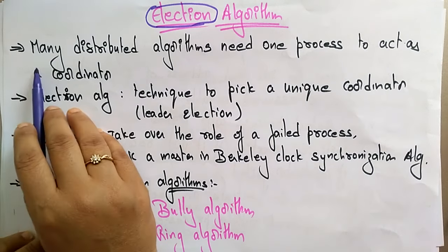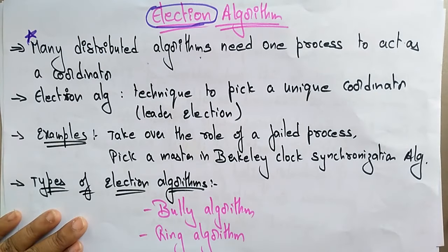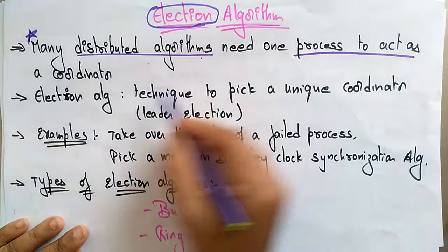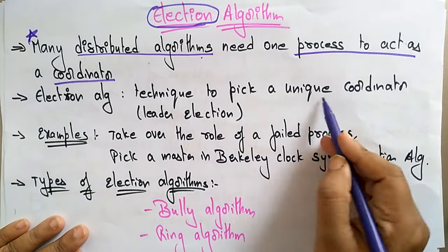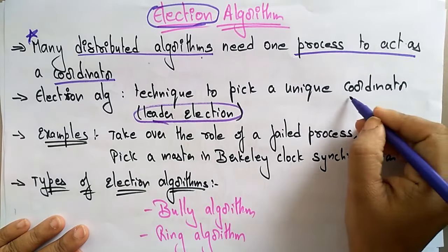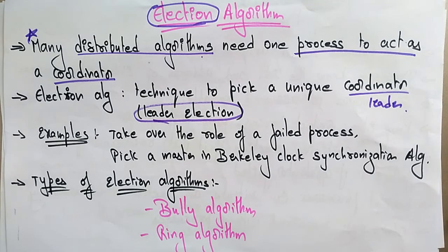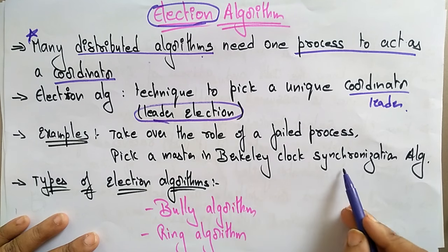Many distributed algorithms need one process to act as a coordinator. The election algorithm is a technique to pick a unique coordinator — that is, a leader. Examples include taking over the role of a failed processor, and picking a master in the Berkeley clock synchronization algorithm.